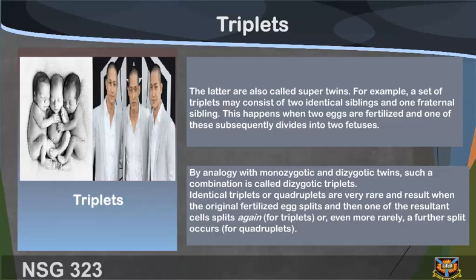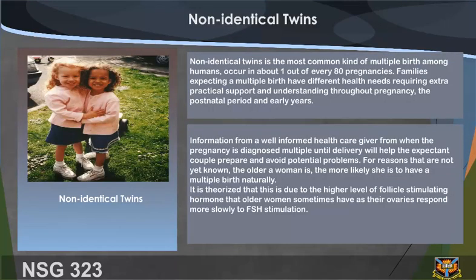This happens when two eggs are fertilized and one subsequently divides into two fetuses. By analogy with monozygotic and dizygotic twins, such a combination is called dizygotic triplets. Identical triplets are very rare and result when the original fertilized egg splits and then one of the resultant cells splits again for triplets, or even more rarely a further split occurs for quadruplets. Non-identical twins are the most common kind of multiple birth among humans, occurring in about one out of every 80 pregnancies.